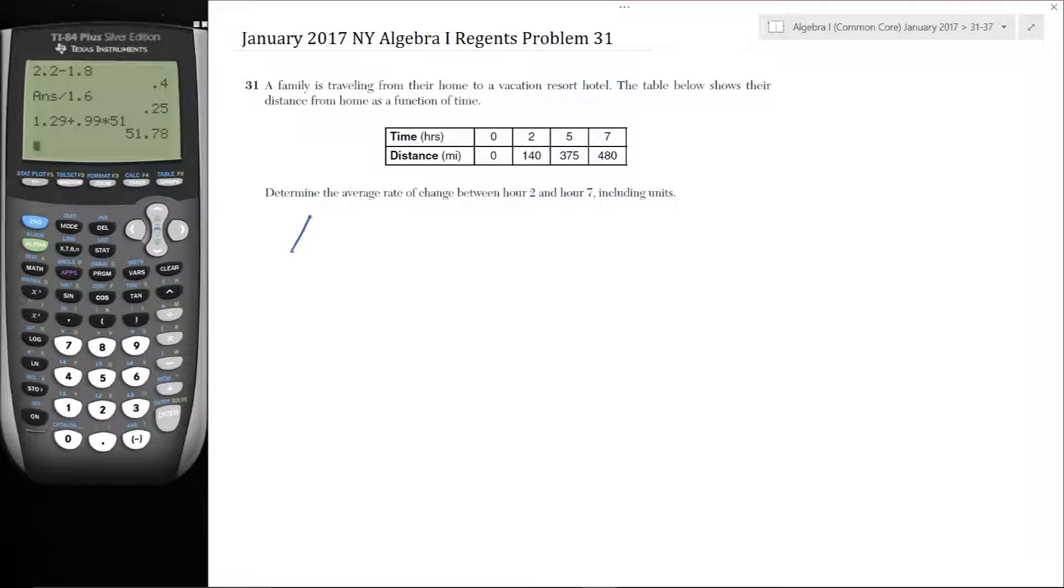Okay, average rate of change. Try the problem on your own and see if you get the same answer. Average rate of change is equal to the change in the dependent variable, so delta distance, divided by change in the independent variable.